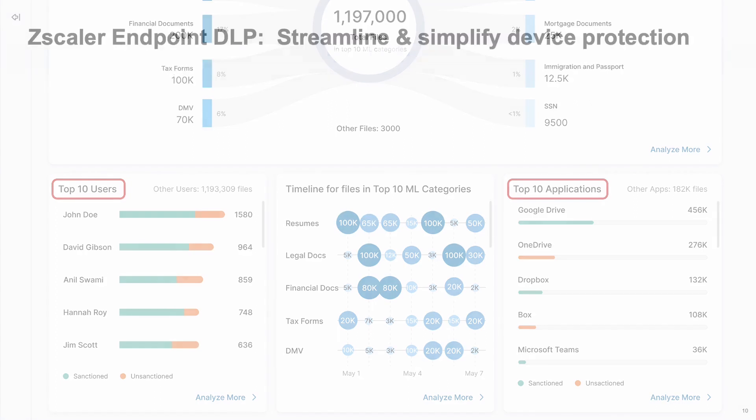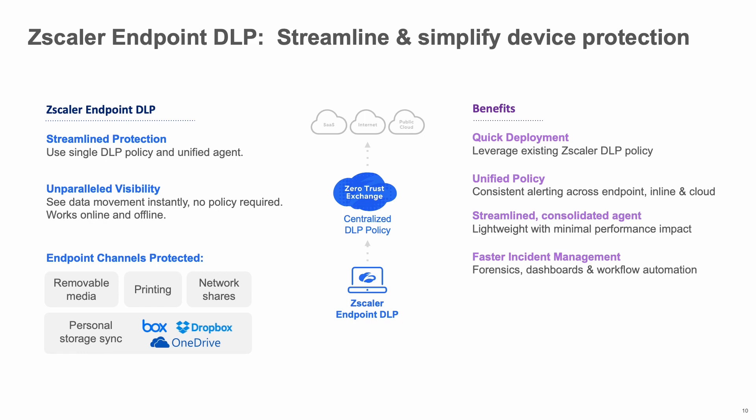We are now newly introducing this AI discovery across our endpoint DLP. The Zscaler endpoint DLP does not require any new agent — it's already built into the Zscaler client connector that is already installed on most of your laptops and desktops. We provide protection across four channels: removable media, printing, network shares and devices, as well as personal storage applications, including applications which are SSL pinned and cannot be inspected in the proxy. This protection is provided both across Mac as well as Windows, giving you unified data protection across multiple channels. You can leverage the existing DLP policy you built in other channels such as API, CASB, or inline DLP — the same incident management, the same user experience — build your policy once and deploy it across multiple channels.